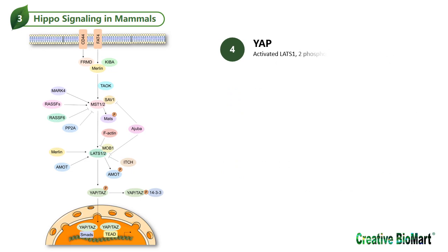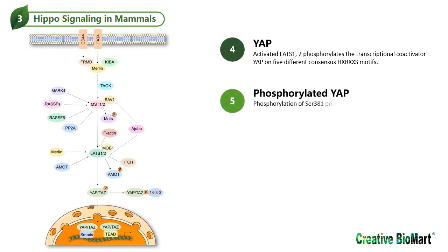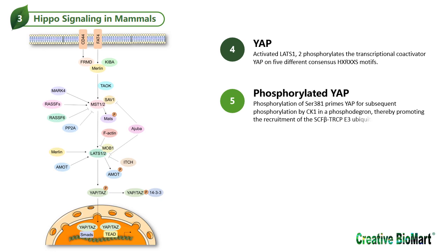Activated LATS1 and LATS2 phosphorylate the transcriptional co-activator YAP on five different consensus HXRXXS motifs. Phosphorylation of Ser381 primes YAP for subsequent phosphorylation by CK1, thereby promoting the recruitment of the SCF-beta-TrCP E3 ubiquitin ligase, which catalyzes YAP ubiquitination, ultimately leading to proteosomal degradation of YAP.